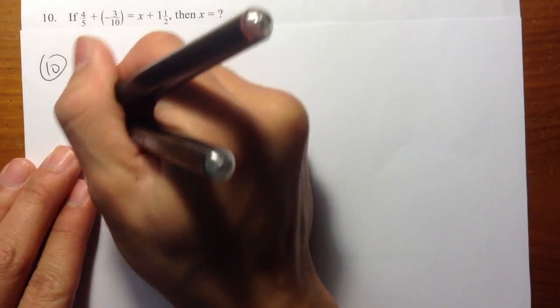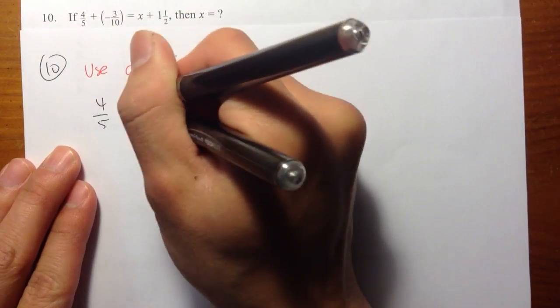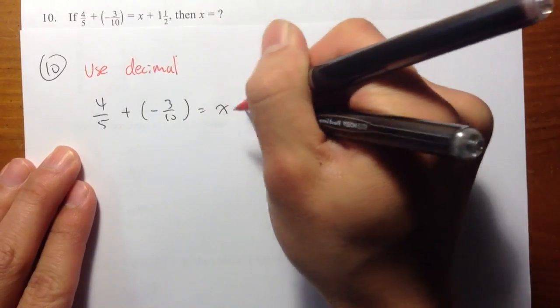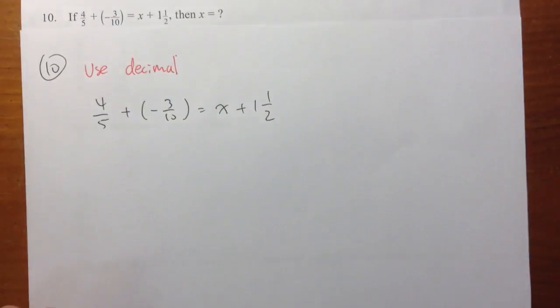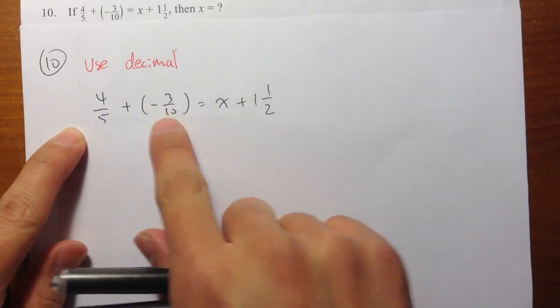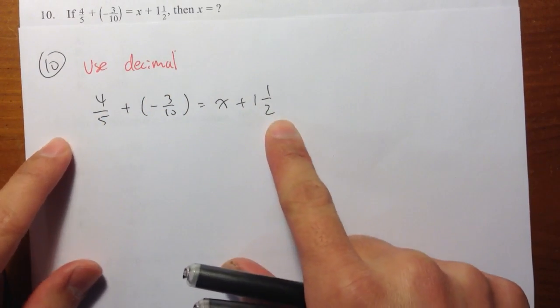Originally, I have 4 over 5 plus parentheses negative 3 over 10 equals to x plus 1 and 1 half. What I mean by use decimal is, I want to change all the fractions and this mixed number to decimals.